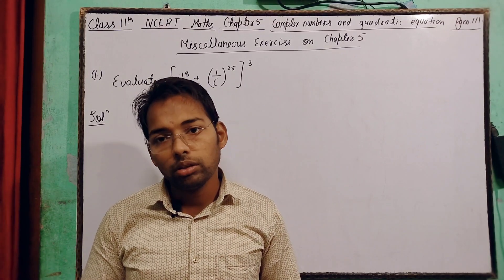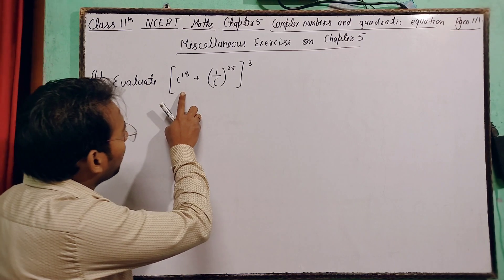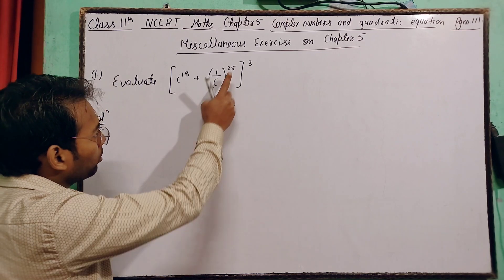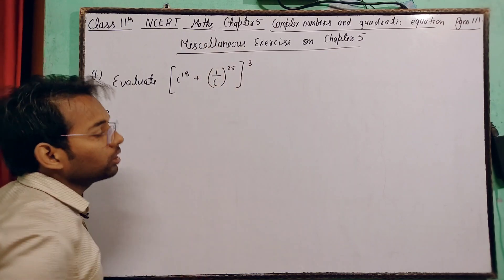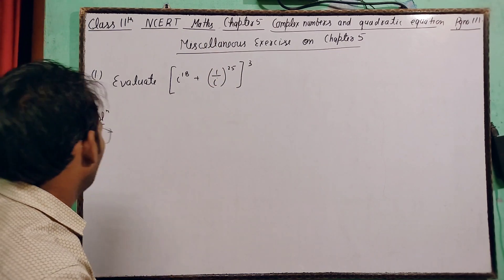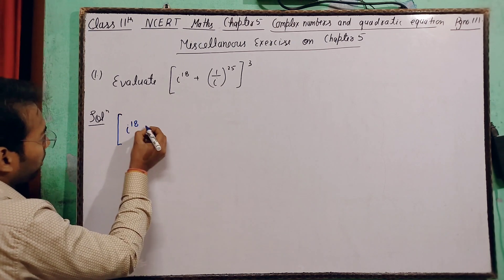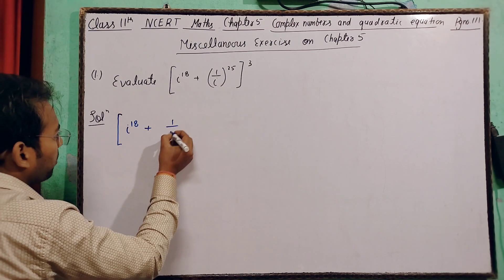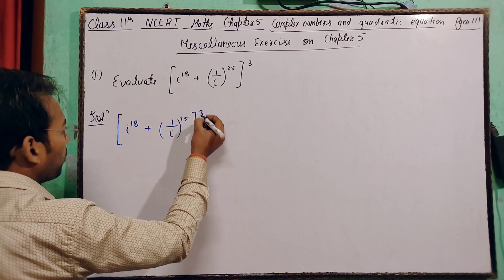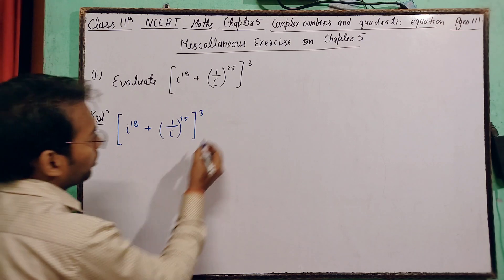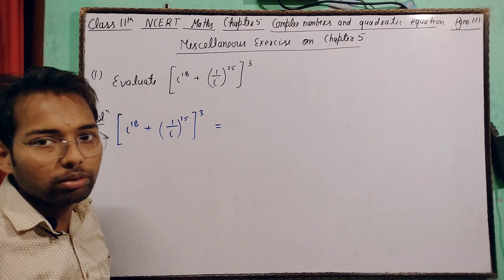Hello students, today we have to evaluate the question: i to the power 18 plus 1 by i to the power 25, the whole to the power 3. To solve it, we will firstly solve the small bracket.